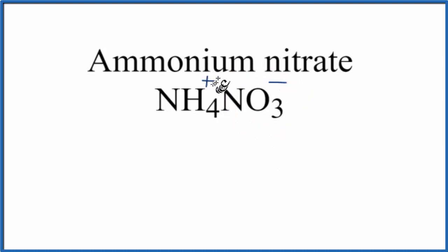So because we have this positive ion and this negative ion, they are attracted to each other, and that forms an ionic bond. So the bond between the ammonium ion and the nitrate ion right here, this bond here, is ionic.